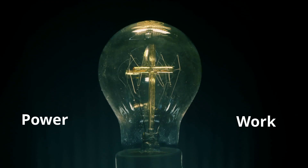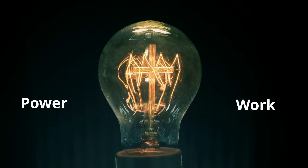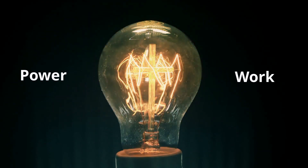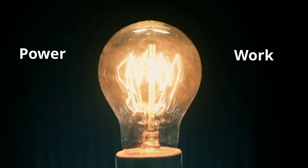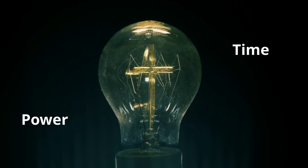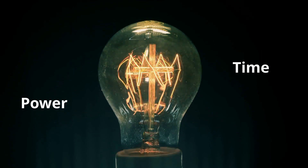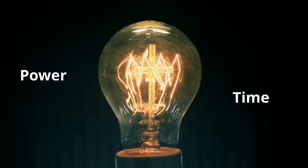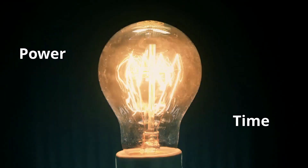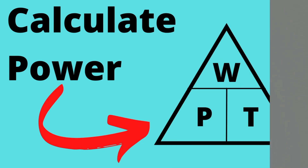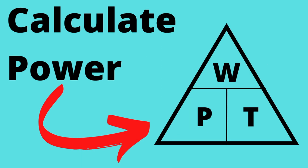You can increase power by either increasing the amount of work or decreasing the amount of time. In summary, power is calculated by taking the amount of work done and dividing it by the amount of time it takes to complete the work.